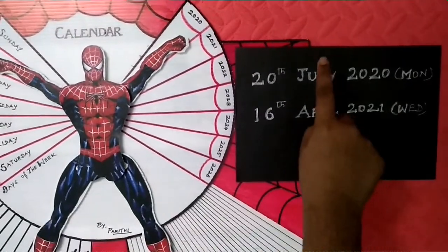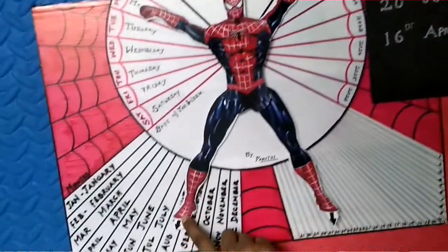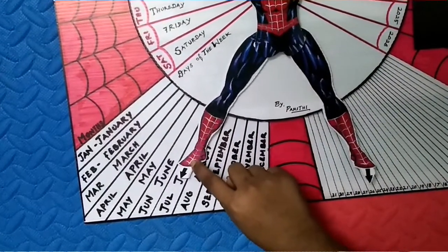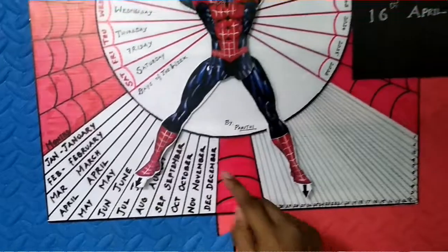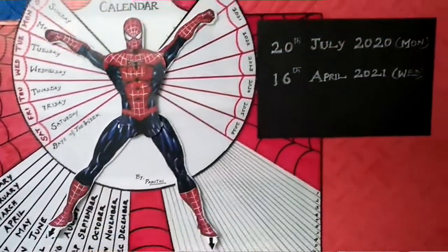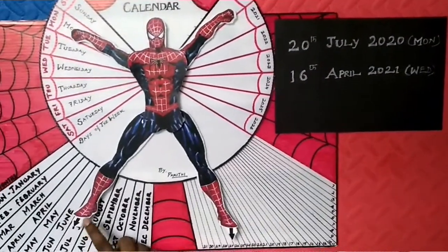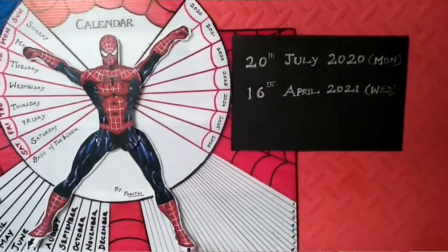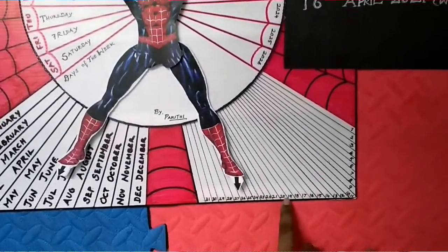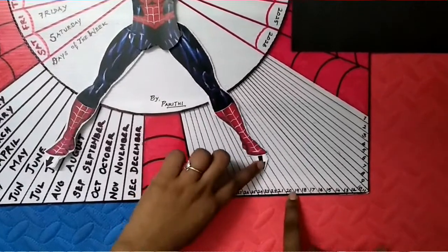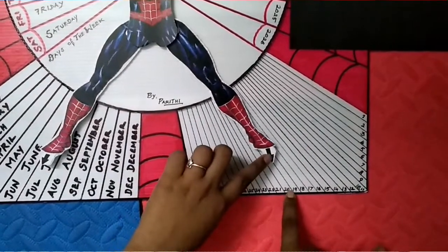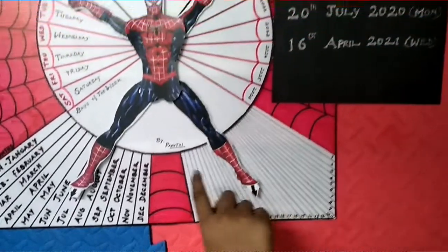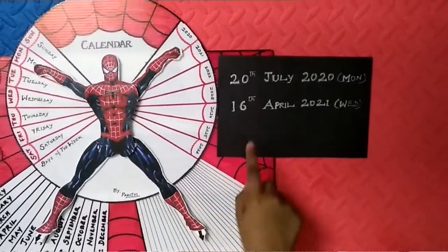Next, the month. It's July. We have to move the right hand to July. And 28th is the date. Let's find the 28th over here — 20th is here. We have to move the left hand to the 28th.